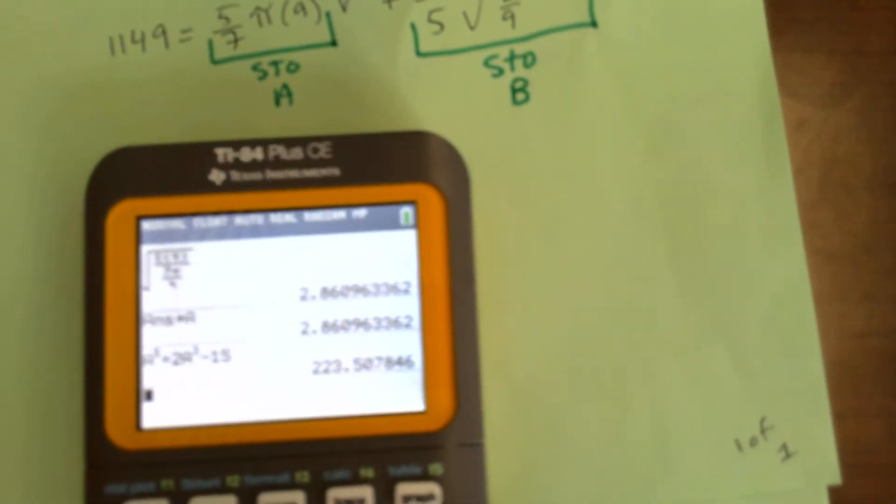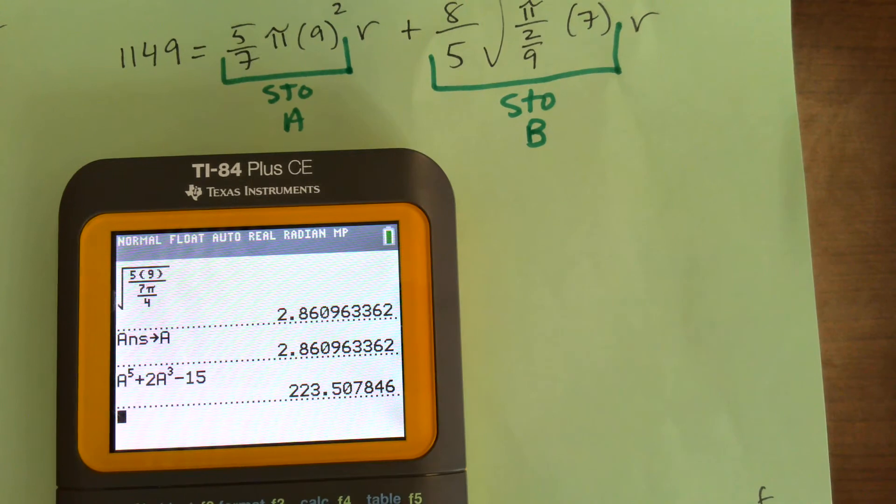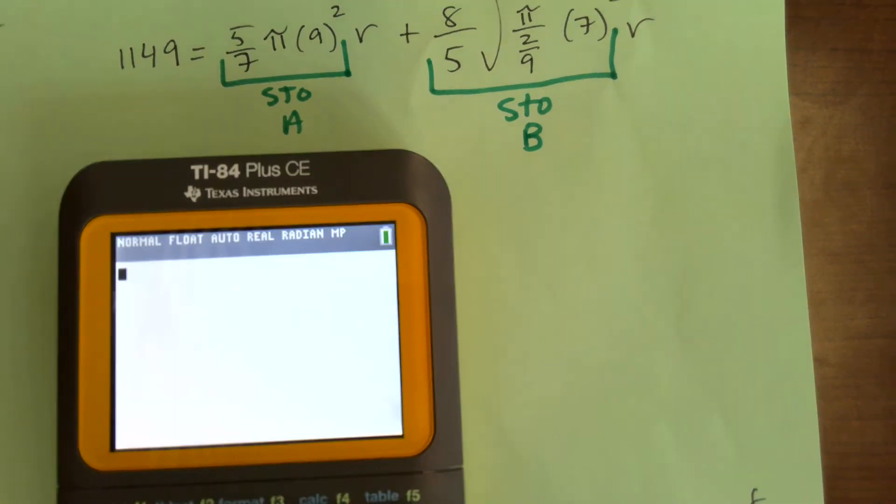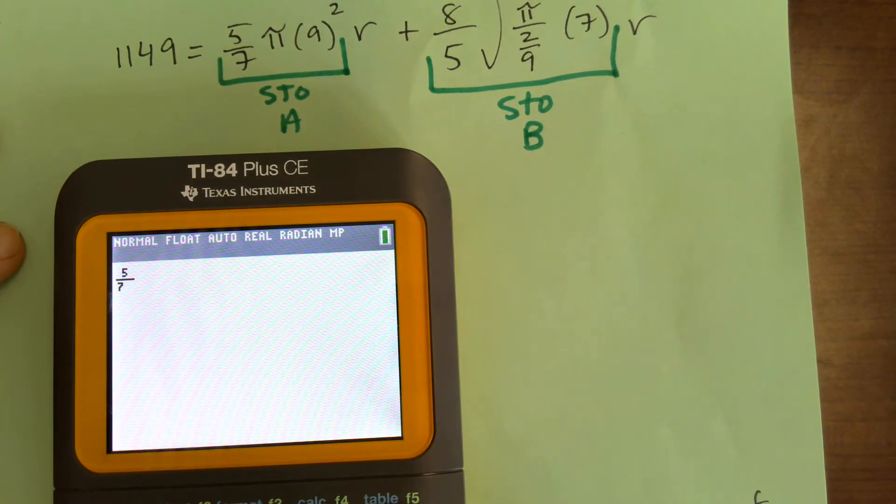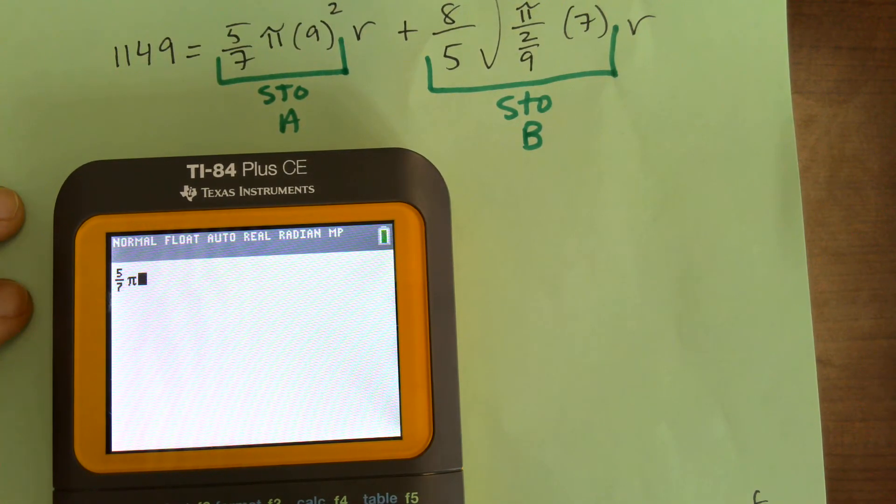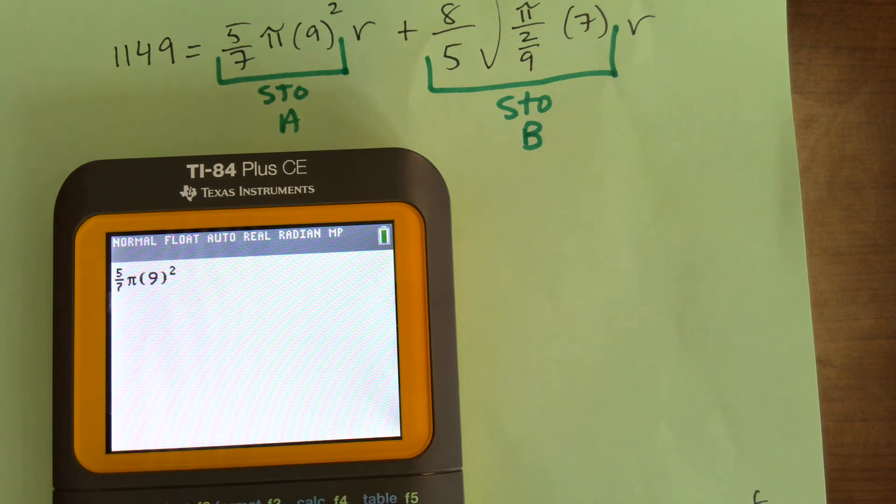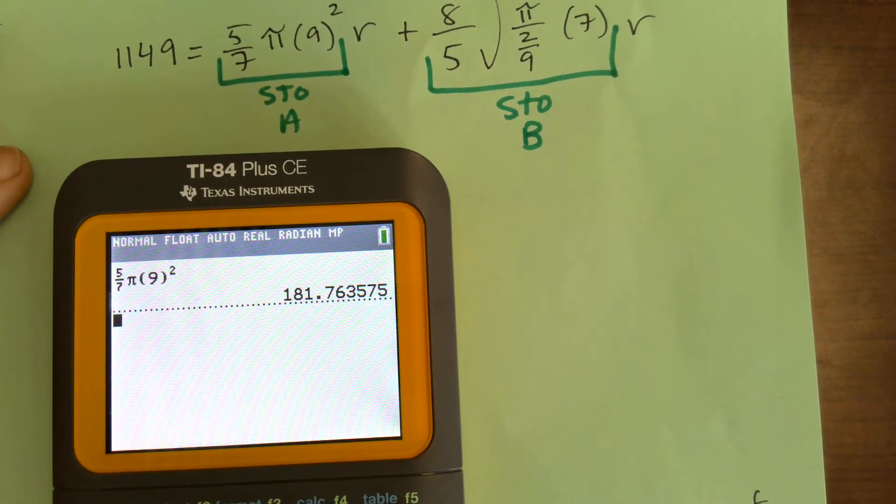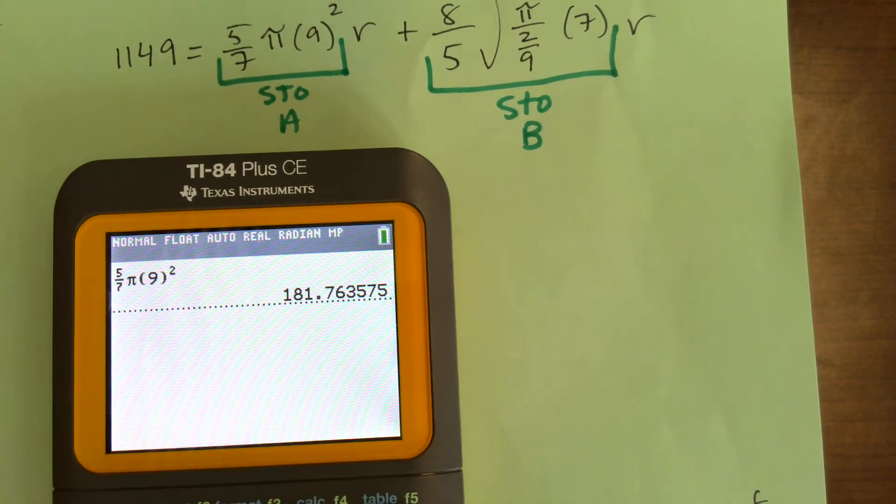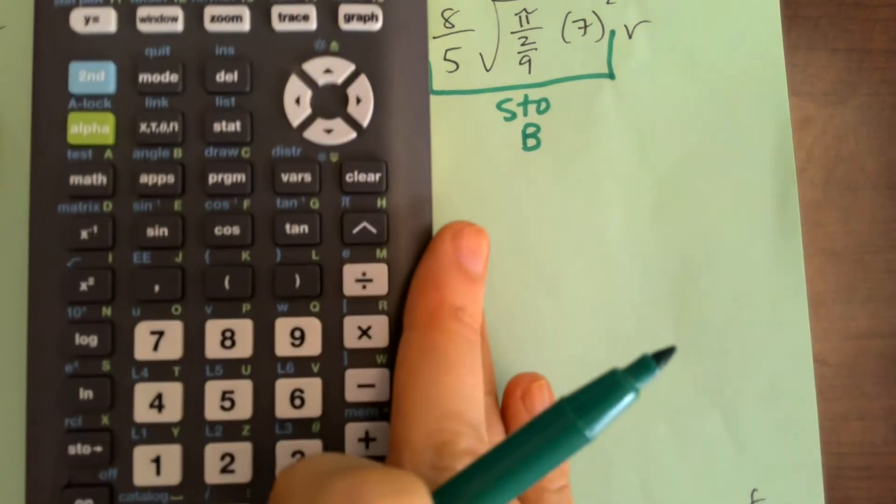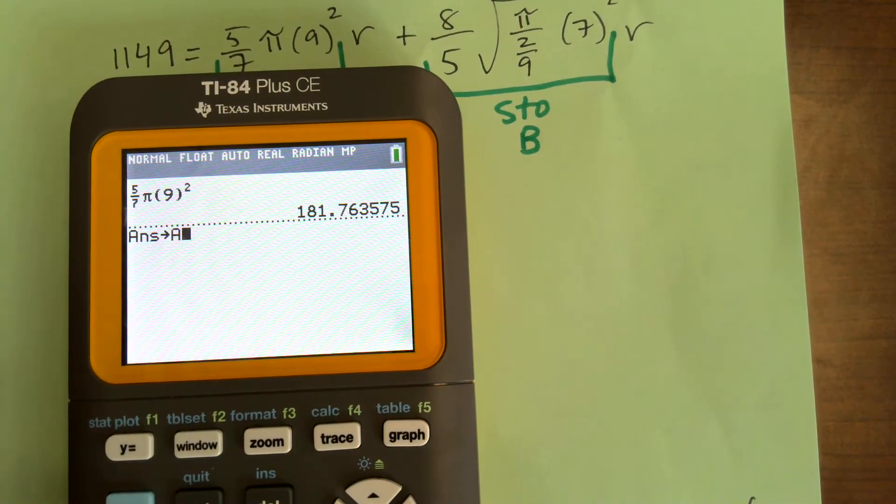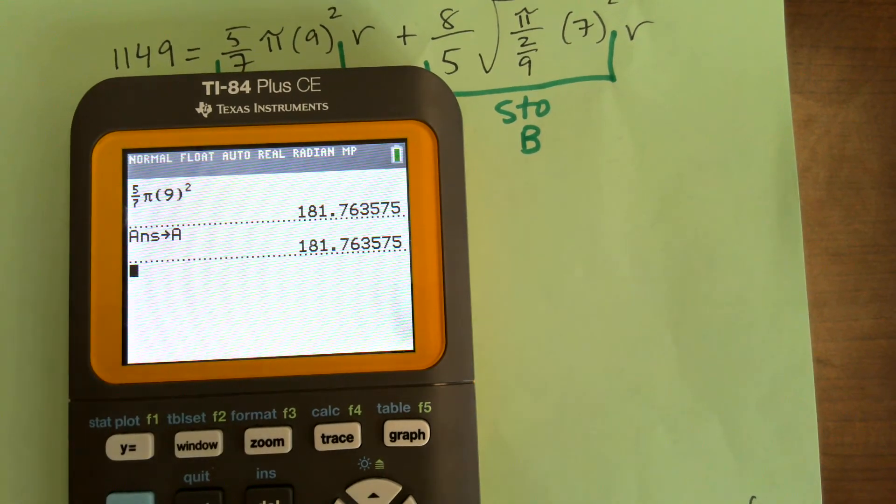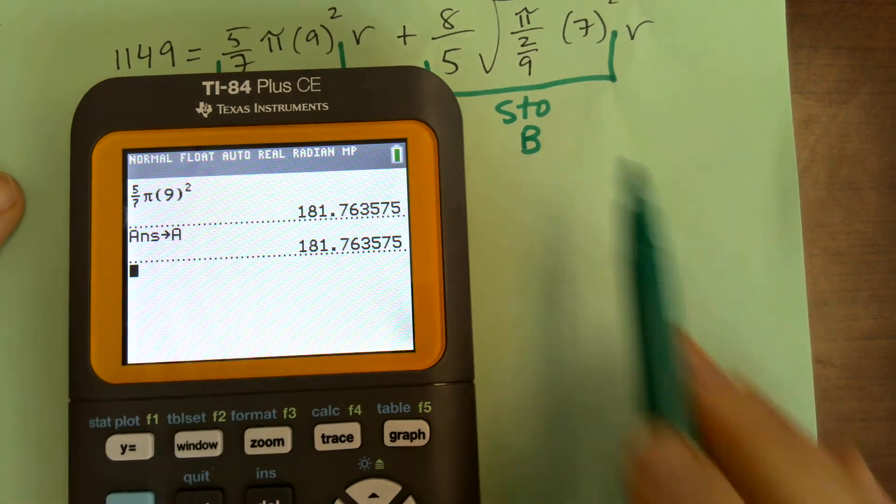If you want, what I'm going to do, this is just a suggestion for how you could use the storing thing. I'm going to store this as A. So this coefficient I will store as A. And then this coefficient I will store as B. All right. So the first coefficient, this is, I guess I'll just use, all right, so 5 over 7 pi, 9 squared.